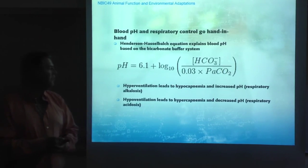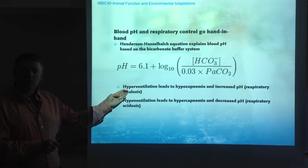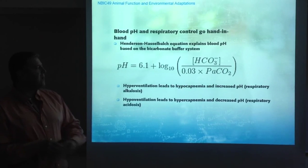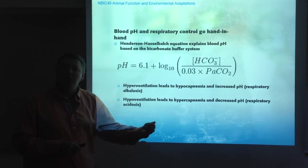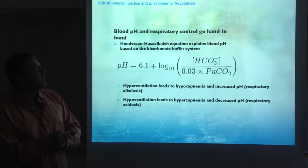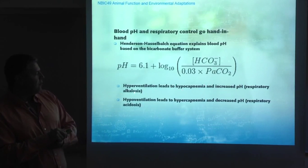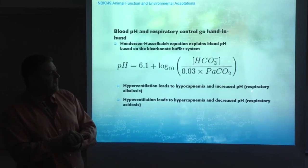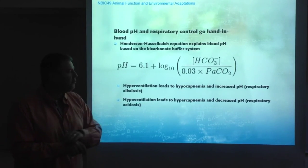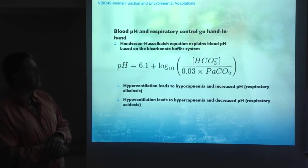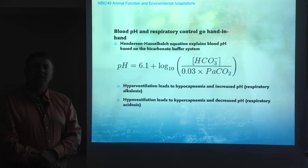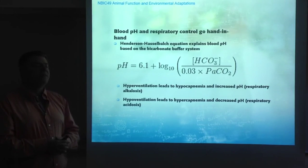Hyperventilation — excessive or increased ventilation — leads to hypocapnemia: low CO2, low partial pressure of CO2 in the blood. This leads to an increase in pH, which we call respiratory alkalosis. Conversely, hypoventilation leads to hypercapnemia, accumulation of CO2, decreased pH, and respiratory acidosis. With this basic equation and buffer system principles, we can predict blood pH in association with ventilation changes.